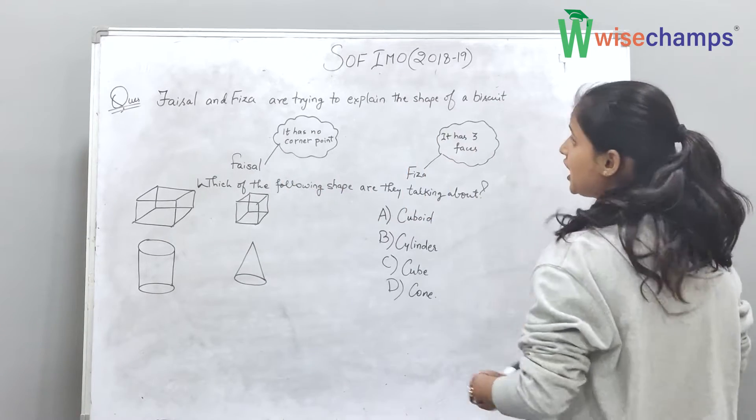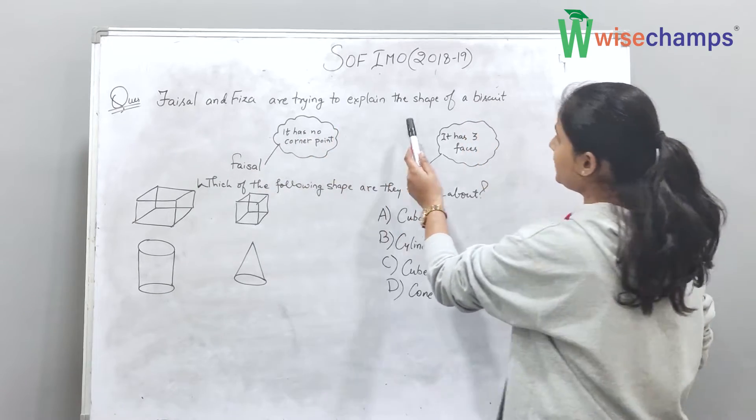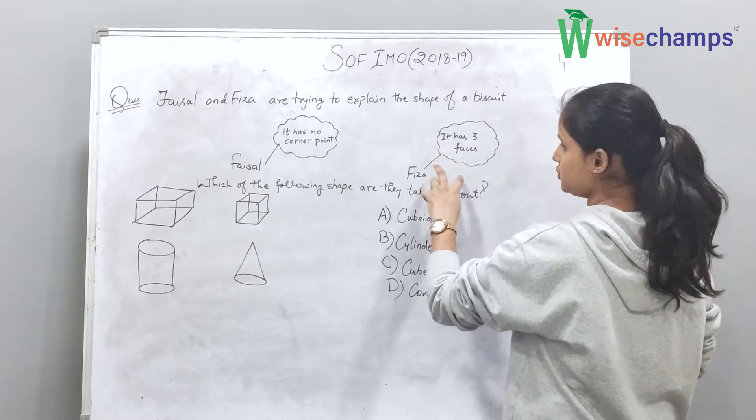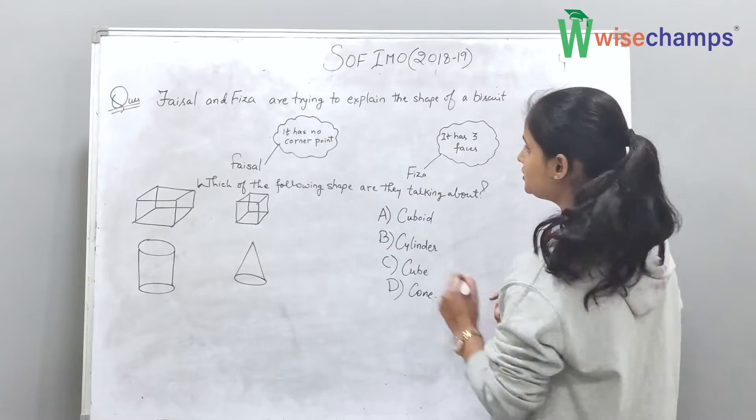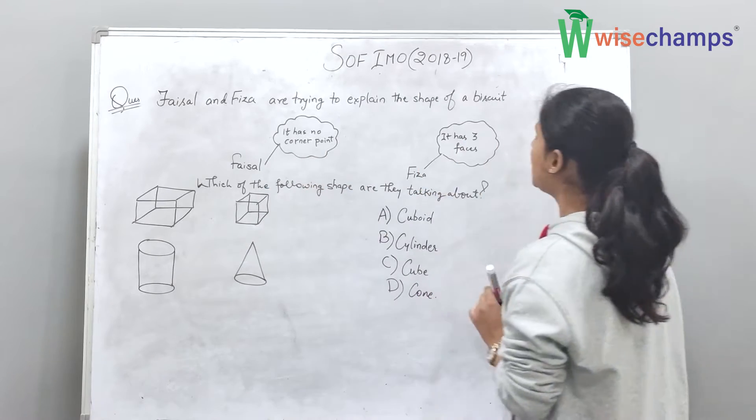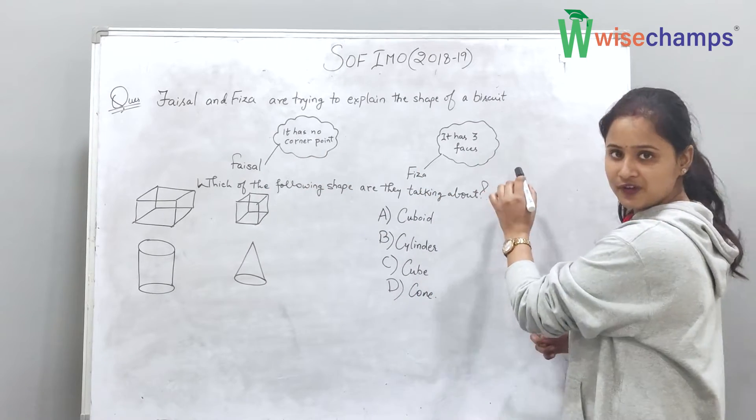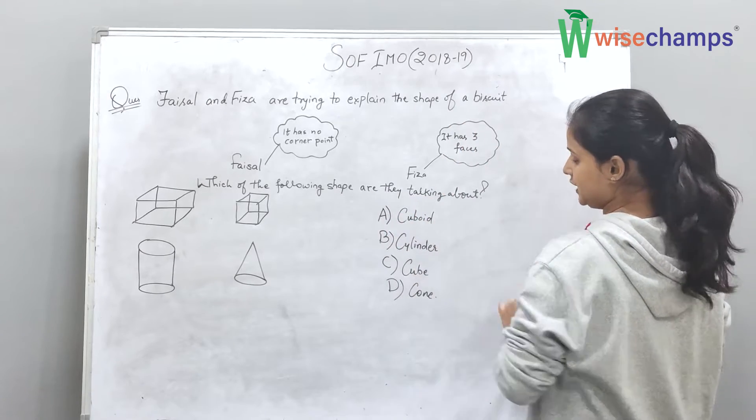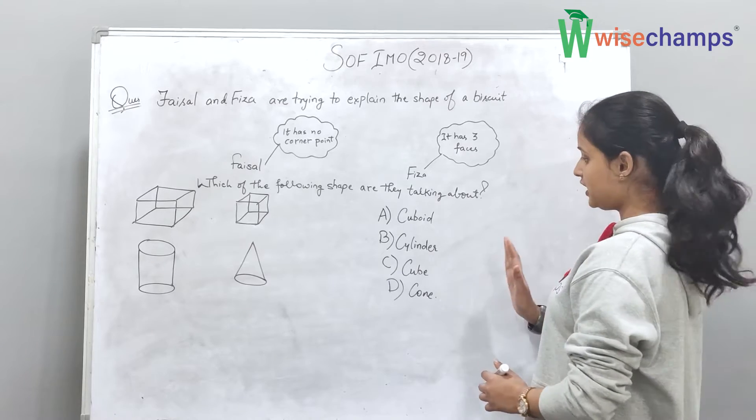So the question is, Faisal and Fatima are trying to explain the shape of a biscuit. We have two conditions in this question. The first is, it has no corner point, Faisal said. And Fatima said it has three faces. Now come to the options, which of the following shapes are they talking about? So we have four options here.